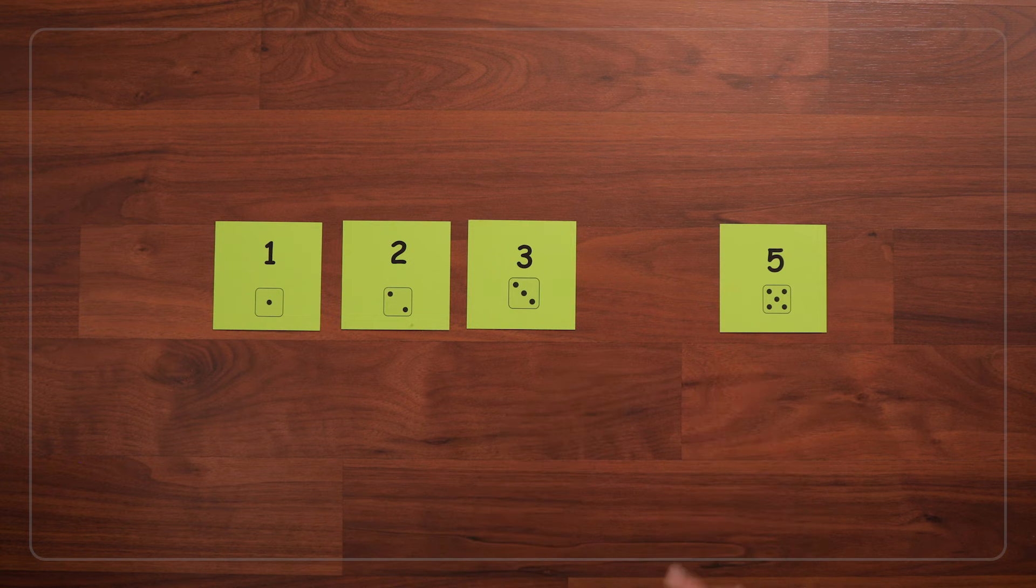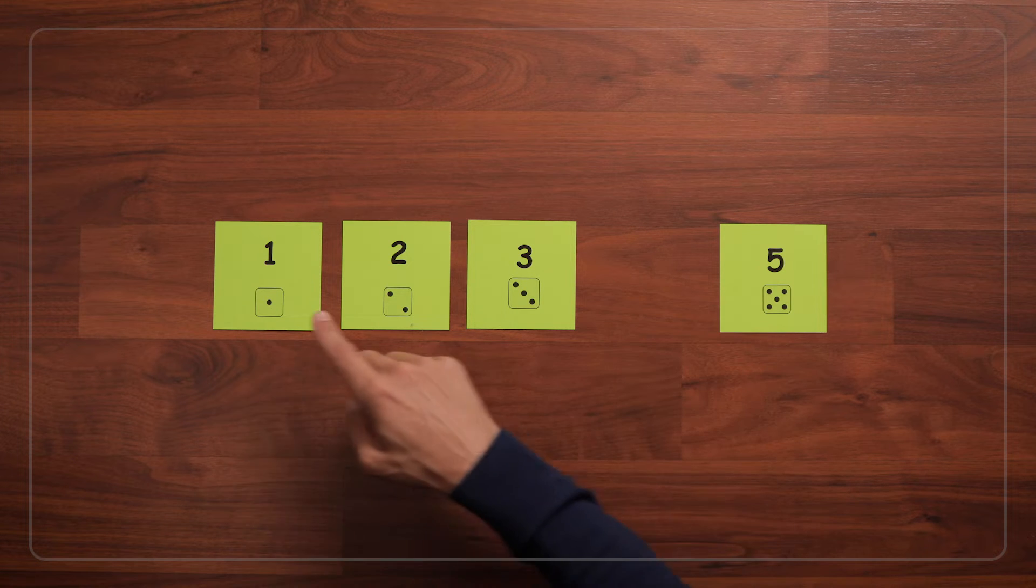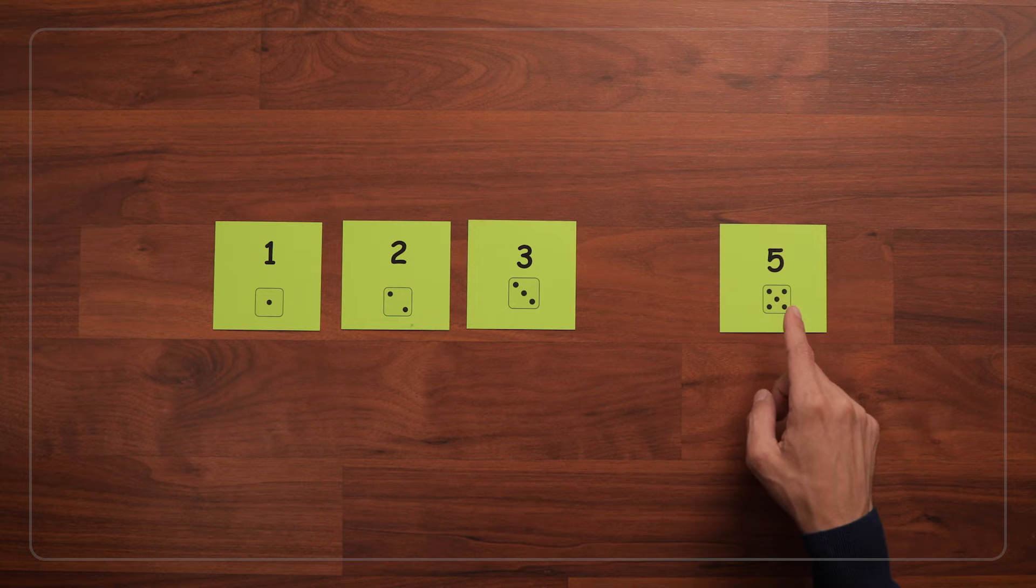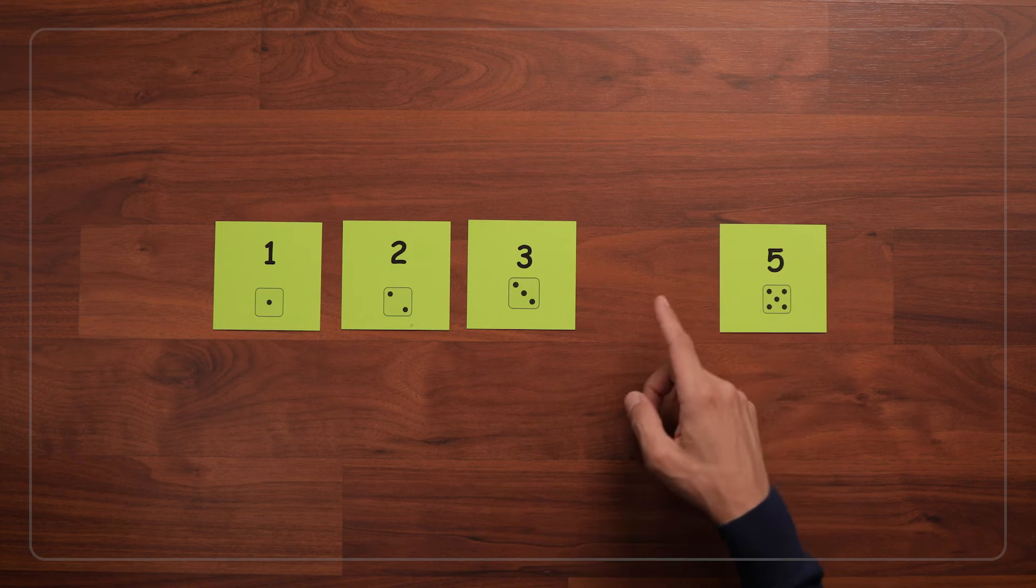Figuring out which card is missing helps kids' sense of number order, or knowing which numbers come before and which numbers come after a given number.